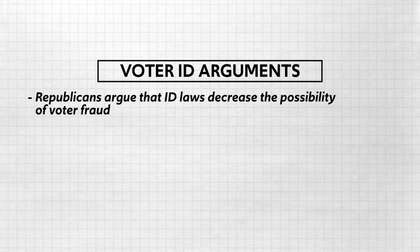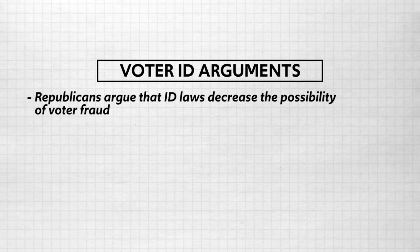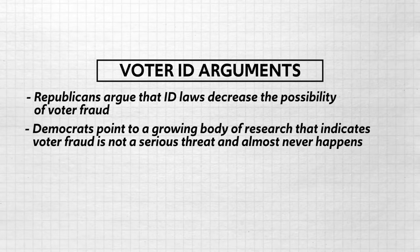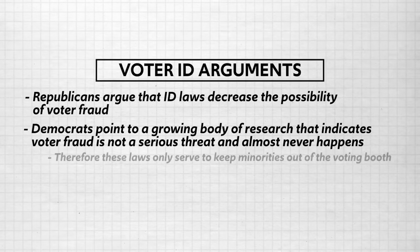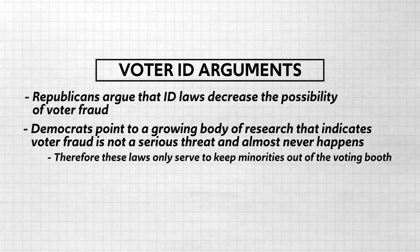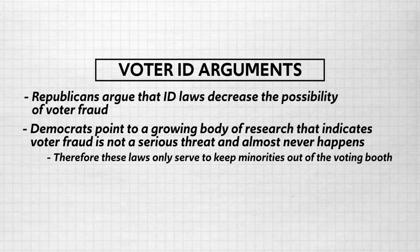It's overwhelmingly in Republican-dominated states where you see these laws enacted, because Americans who do not have IDs reliably vote for Democrats. Republicans argue that voter ID laws decrease the possibility of voter fraud, but Democrats point to a growing body of research indicating that voter fraud almost never happens, and therefore these laws only serve to keep minorities out of the voting booth. Whichever side you agree with is not the point — the point is that voter ID laws can be a structural barrier to voting.